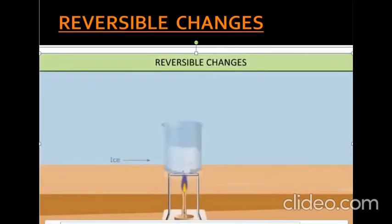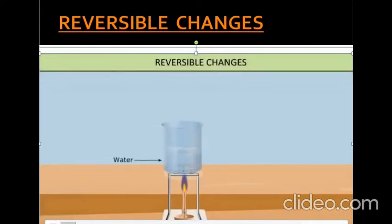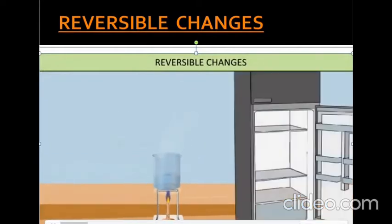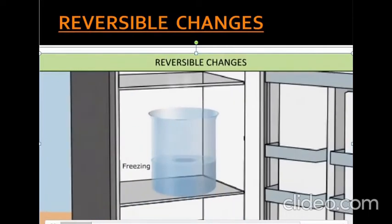Now let's look more closely at reversible change. If a change can be reversed, it is called a reversible change. This means that it is possible to get the new object back into its original form. A reversible change can take place both ways, and can be brought about by natural processes as well as by human activities.